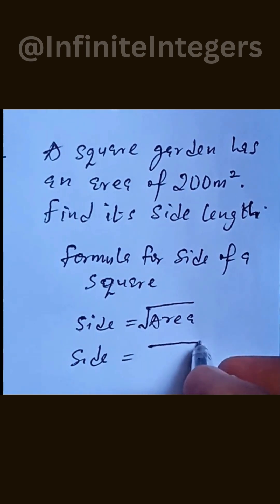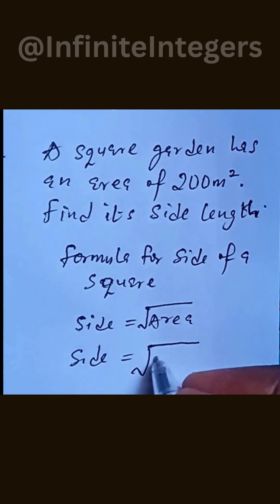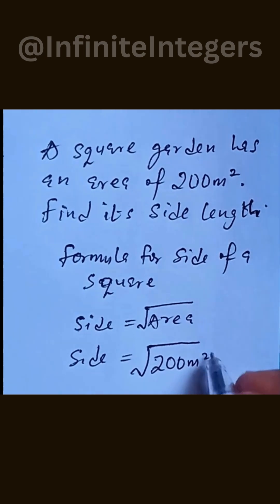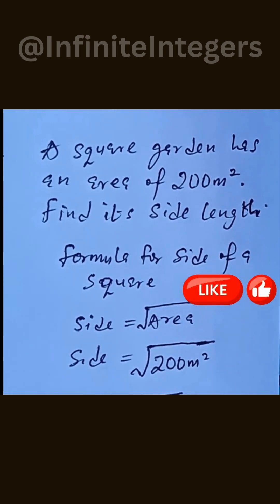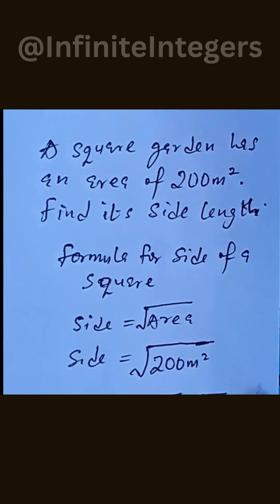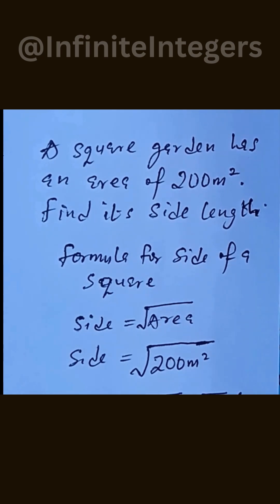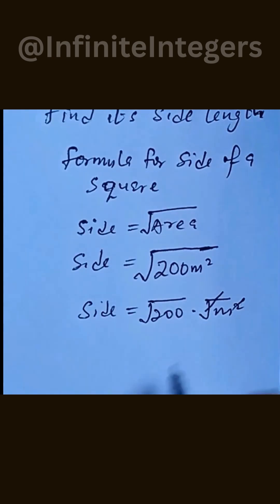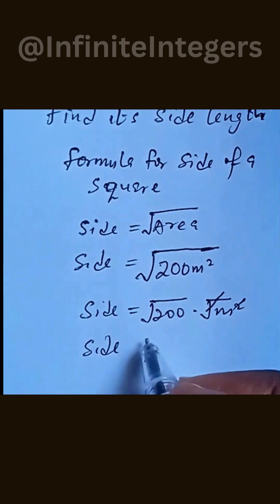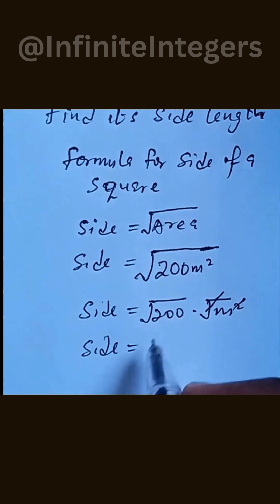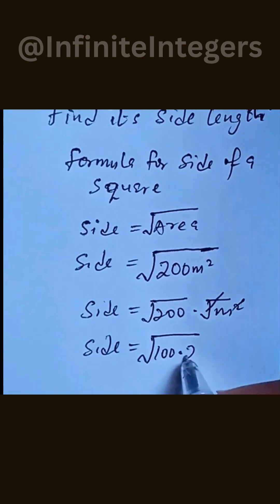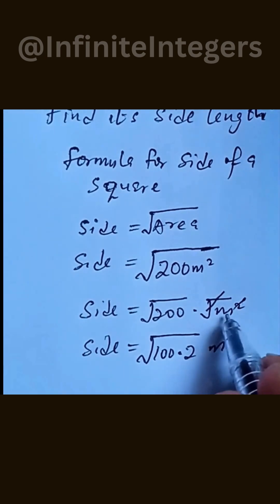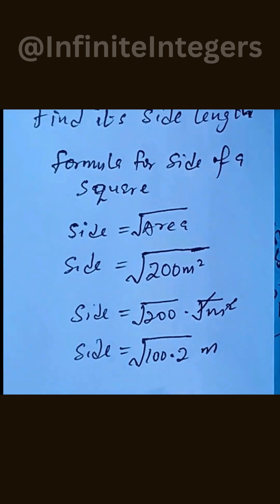The side will be equal to the square root of 200 meter squared. We split this as the square root of 200 then meter squared — the square root and the squared unit cancel, leaving just meter. We then simplify the radical: 200 equals 100 multiplied by 2, so we have the square root of 100 multiplied by the square root of 2, times meter.